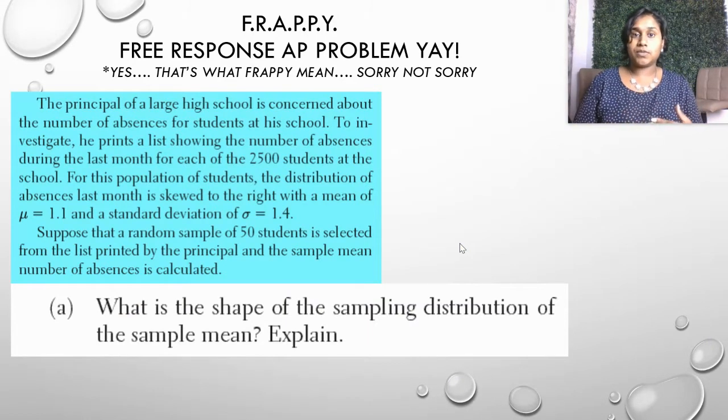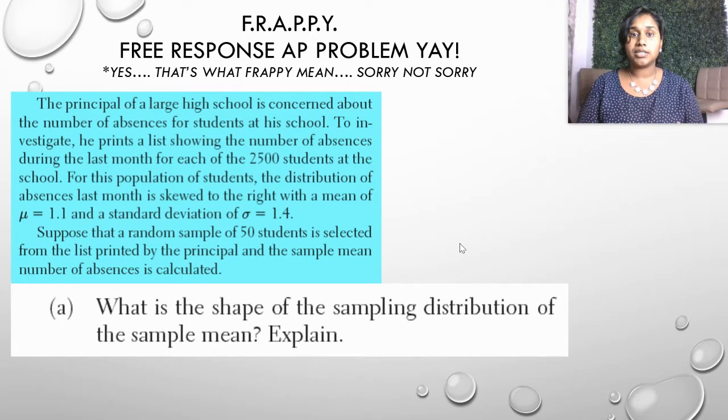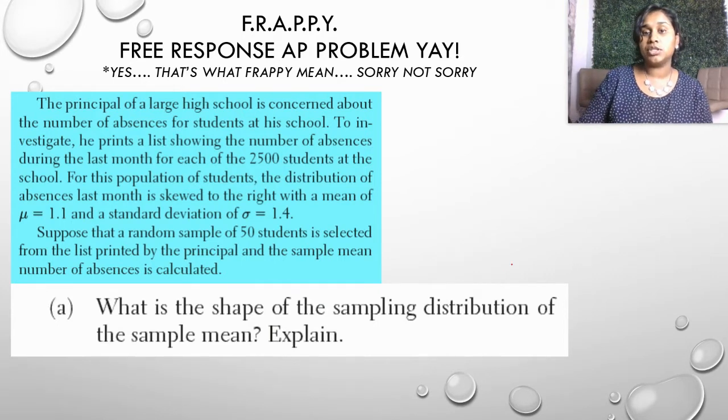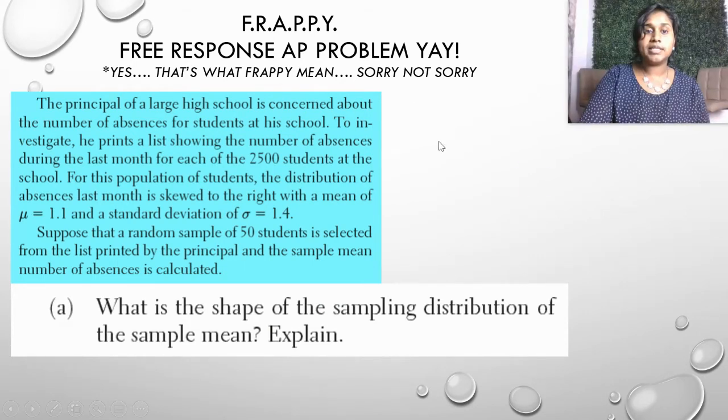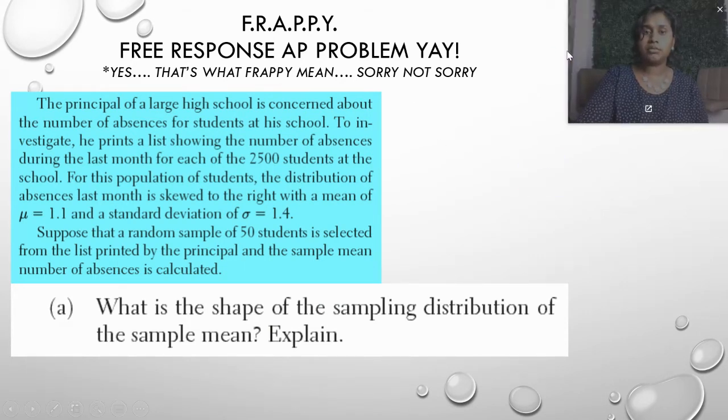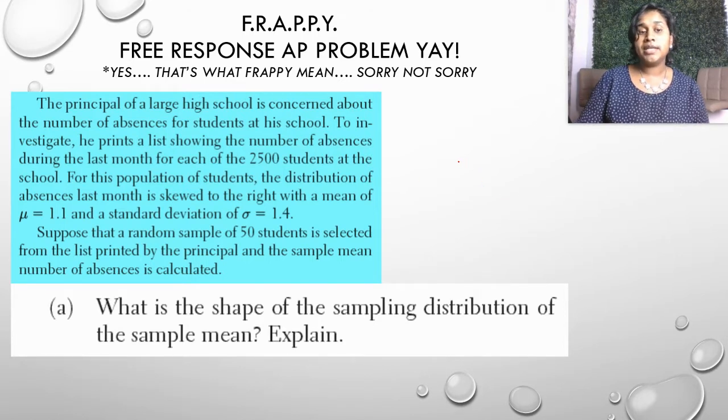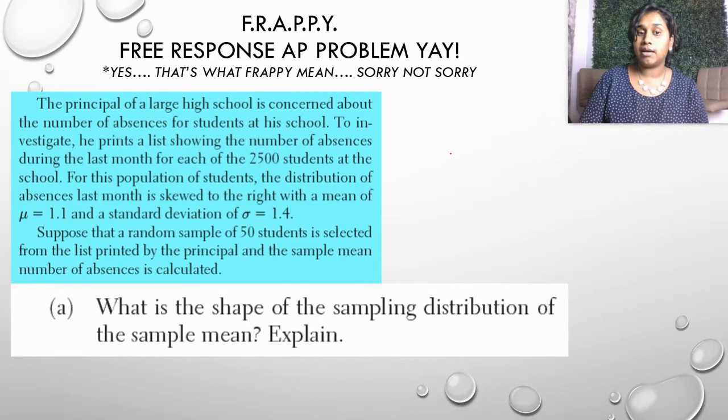The principal of a large high school is concerned about the number of absences for students at his school. To investigate, he prints a list showing the number of absences during the last month for each of the 2,500 students at the school. For this population of students, the distribution of absences last month is skewed to the right with a mean of μ equals 1.1 and a standard deviation of 1.4. Suppose that a random sample of 50 students is selected from the list printed by the principal and a sample mean number of absences is calculated.